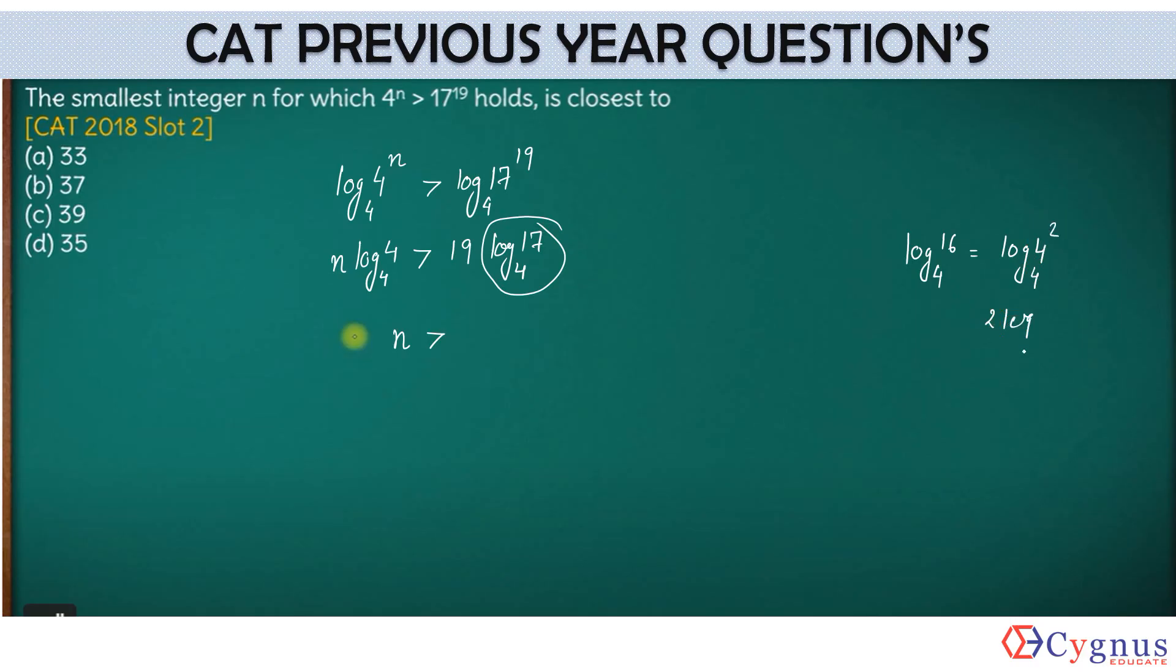So definitely this is not 16, it's 17. So this part, log₄(17), has to be more than 2. So let's look at the right-hand side: 19 into a number which is already more than 2, a number greater than 2. So this product has to be greater than 38.